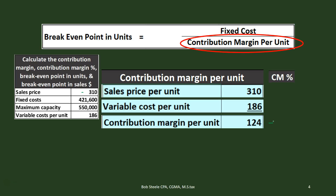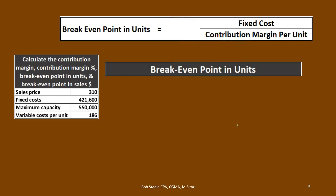The contribution margin ratio — also called the contribution margin percent — is the $124 divided by the sales price. So $124 divided by $310 gives us 0.4, or 40%. We'll use these numbers in our break-even point in units formula, which is fixed cost divided by the contribution margin per unit.